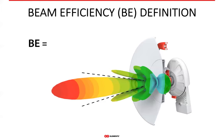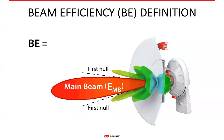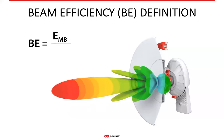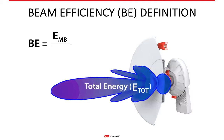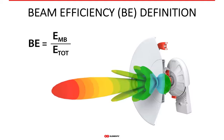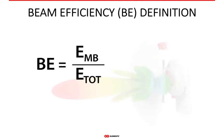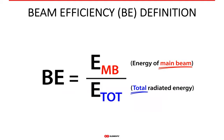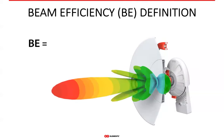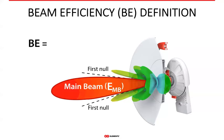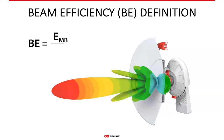Beam efficiency is the parameter WISPs should have been looking for since the dawn of this industry — it gives the right answer to the question about side lobes. At RF Elements, we do what we believe is best for the customer, even if it means bringing in something not considered before and different from what other manufacturers are saying. If beam efficiency is the ratio of energy contained in the main lobe to the total energy an antenna radiates, it is also a measure of side lobes, as we explained.